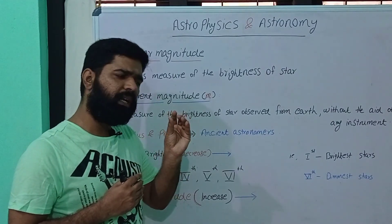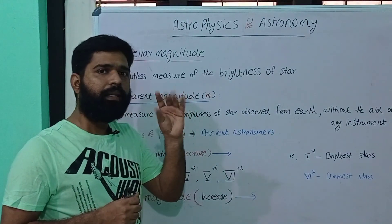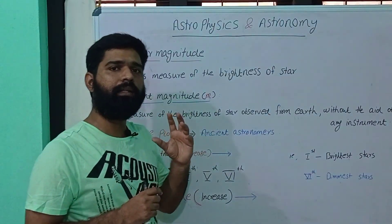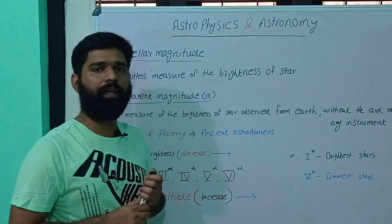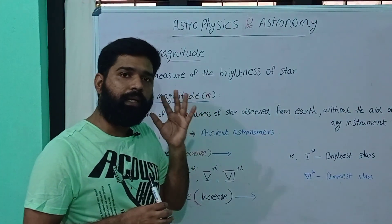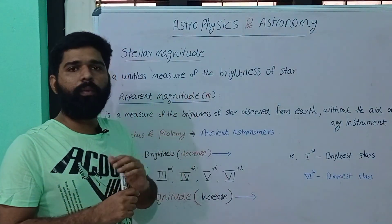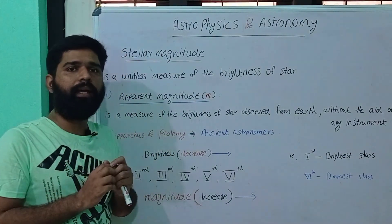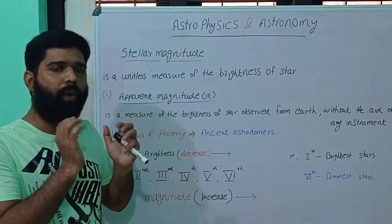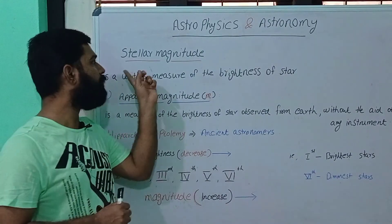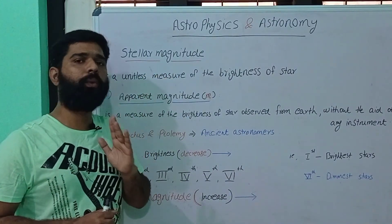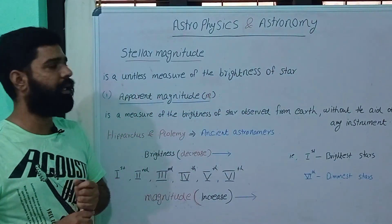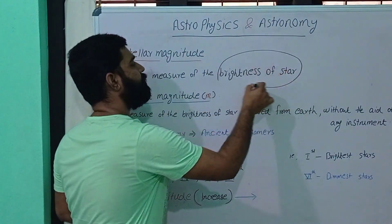The light from stars will be very minute from a distance. If you observe the light, you can see its intensity and brightness. If you observe from here, you can see the distance and the brightness of that light. That observed brightness is called magnitude — stellar magnitude. It is unitless.